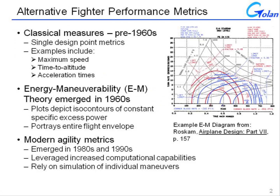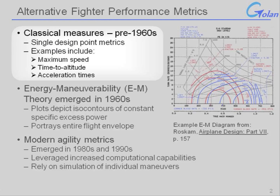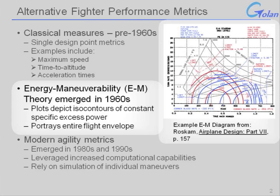To provide a little bit of a recap: in the pre-1960s era, the classical measures of aircraft performance, including fighter performance that were in vogue, were single design point type metrics — things like maximum speed, time to altitude, and acceleration times. In the 1960s, many of these were largely superseded as the primary figures of merit by energy maneuverability theory, or EM diagrams. These were plots depicting isocontours of constant specific excess power across an entire flight envelope, providing a more holistic view of how the aircraft would perform.